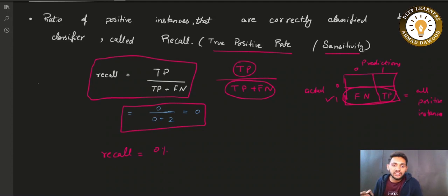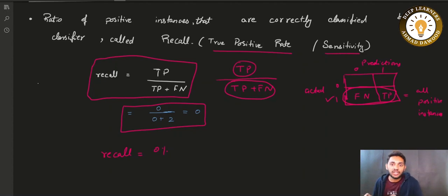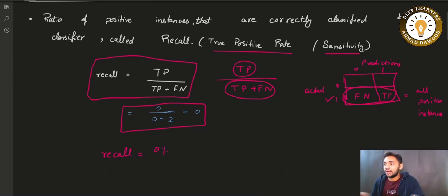By recall you can judge your classifier — how bad it is. Accuracy was giving 80 percent, but recall gives zero percent for this dumb model. You can see how good recall is to use when accuracy is not giving a meaningful measure. A recall of zero percent clearly shows that our model is very bad.